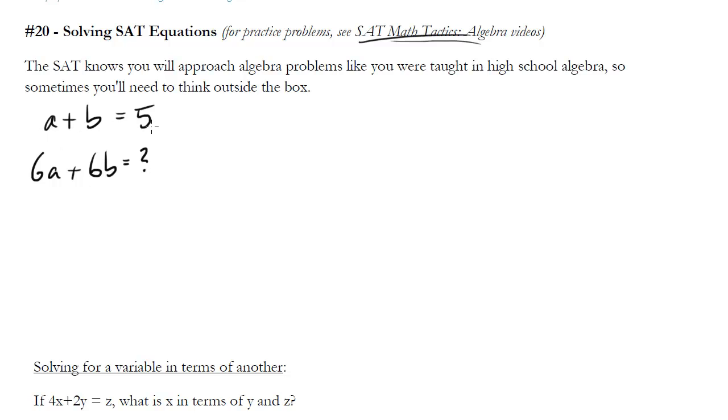If a plus b equals 5, and I'm looking for 6a plus 6b, let me just go ahead and multiply both sides by 6. Notice what's weird is I'm not solving for a individually, I can't do that. I'm not solving for b individually, but I'm solving for them together.